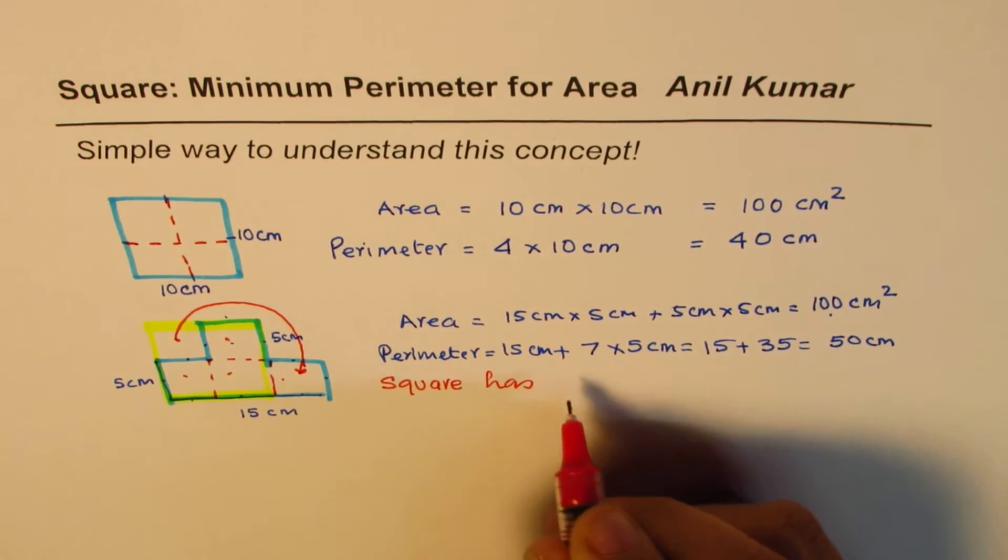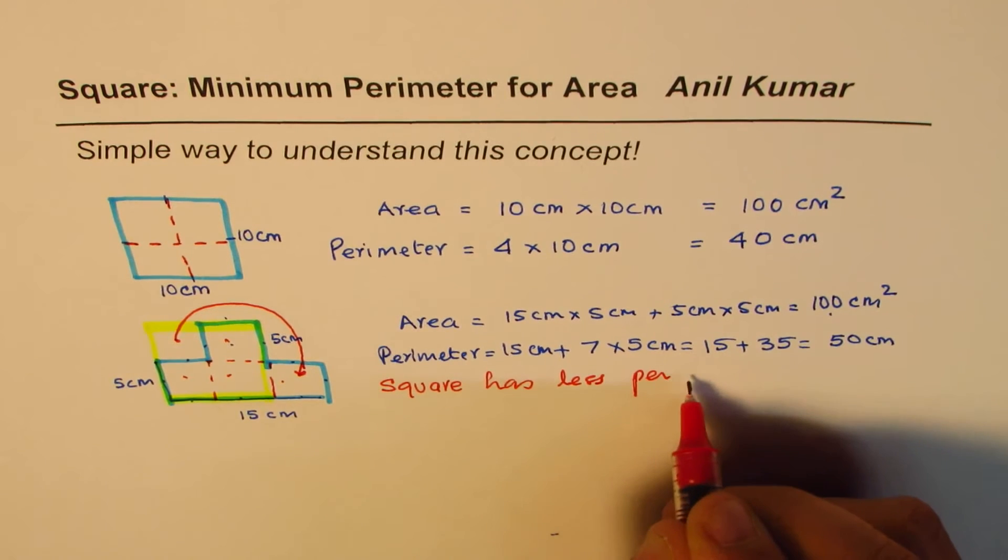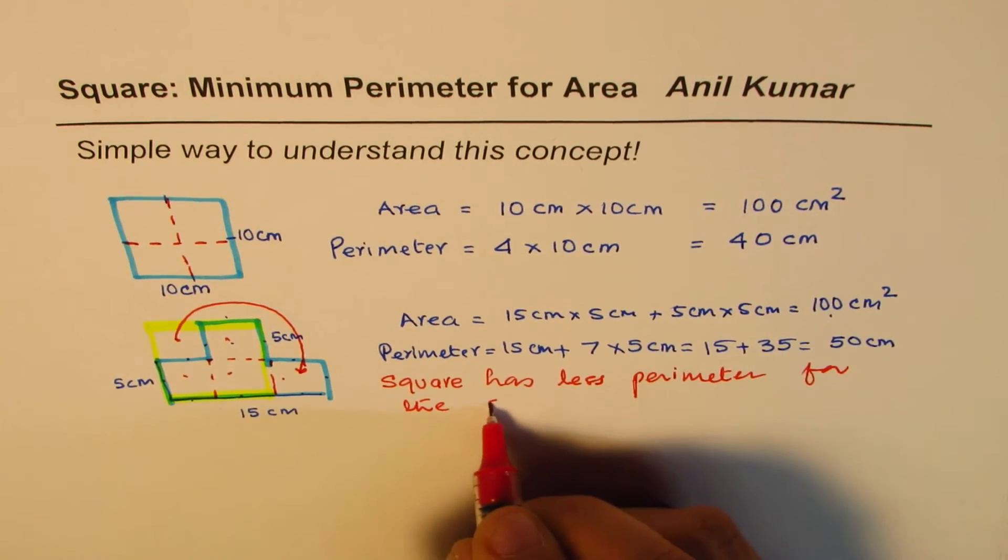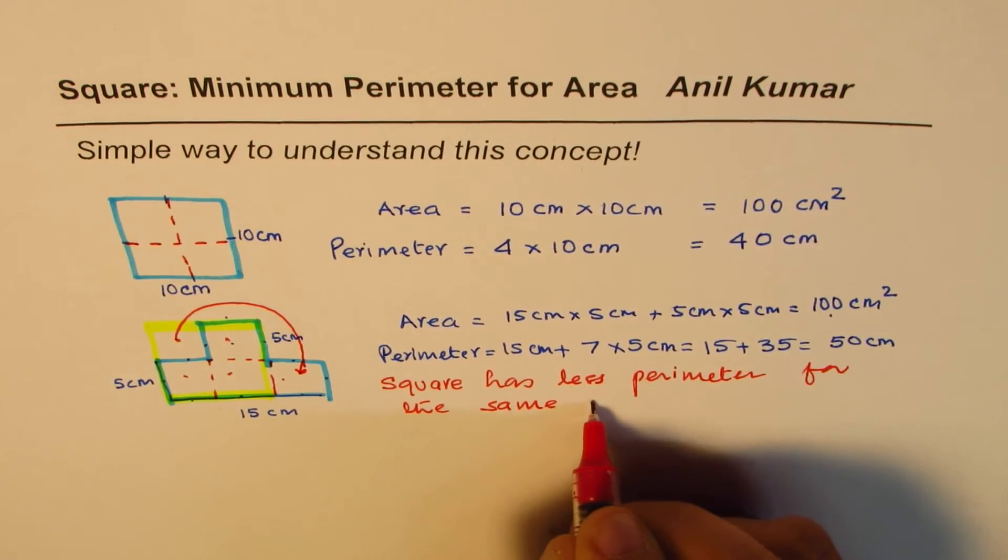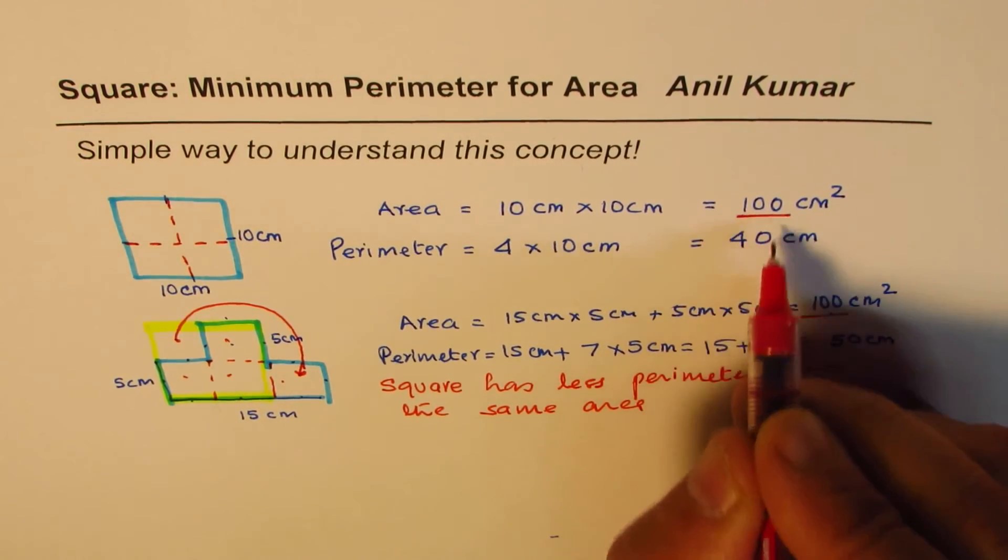...has less perimeter for the same area. Do you understand? For the same area, area is same, right? Hundred and hundred. And the perimeter is much lesser. Do you get it?